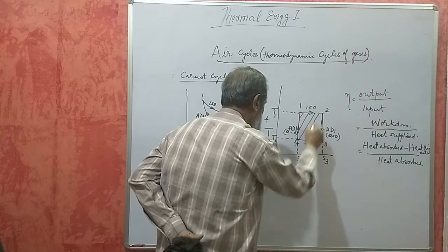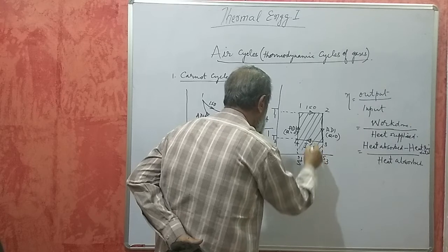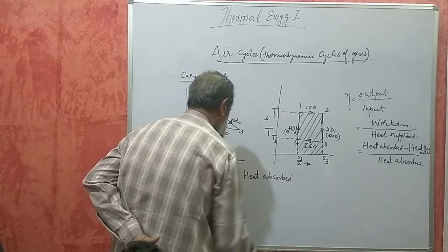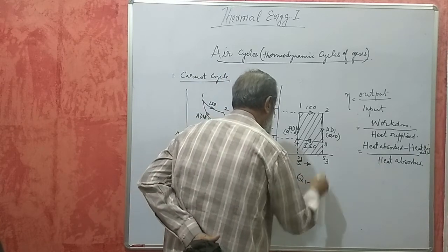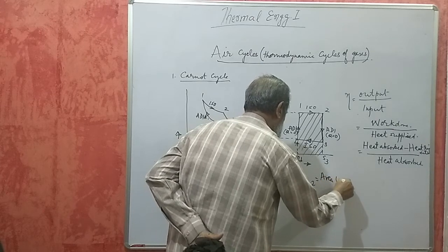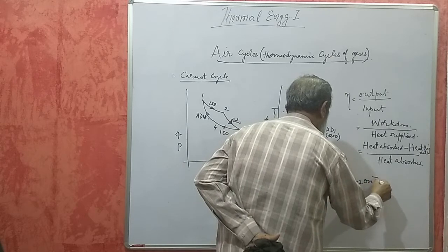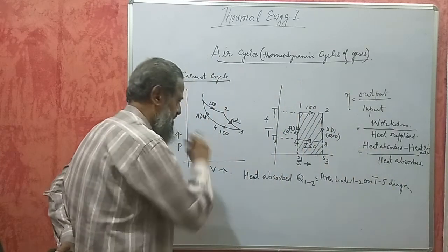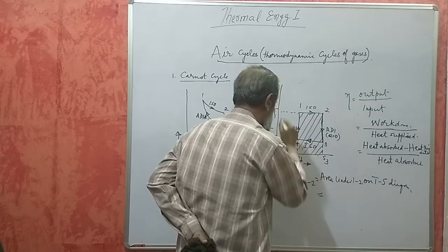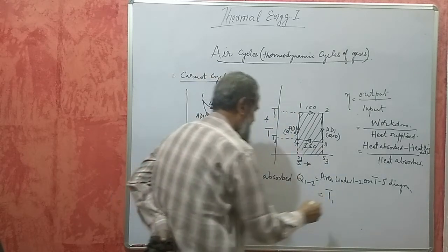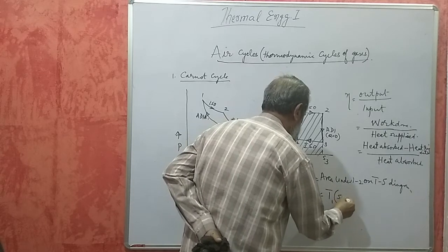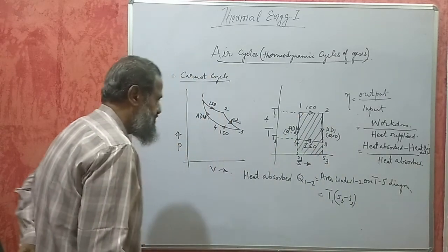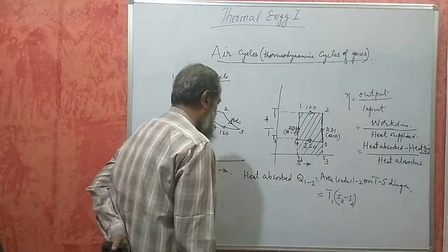The area under the TS diagram gives heat supplied or rejected; the area under the PV diagram gives work done. Heat absorbed during process 1-2 equals the area under the TS curve, which is T1 × (S3 − S2) since it forms a rectangle. This is the heat absorbed during the isothermal heating process. Heat rejected during process 3-4 equals T3 × (S3 − S2).